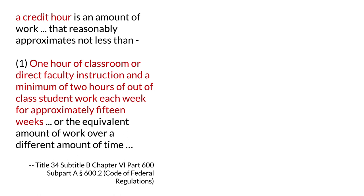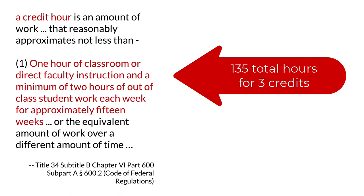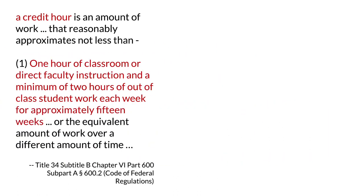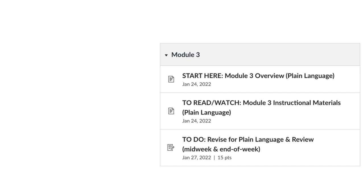In the U.S., universities that receive any federal funds use this definition of credit hour: one hour of classroom or direct faculty instruction and a minimum of two hours of out-of-class student work each week for approximately 15 weeks. That means a three credit hour course must include at least 135 hours of activity. If we divide those hours over eight weeks instead of fifteen, we get 16.875 hours every week for eight weeks. In TECM 5200, I've assumed your workload every week is a minimum of ten hours, and I've carefully considered how you should allocate those ten hours to perform best in the course.